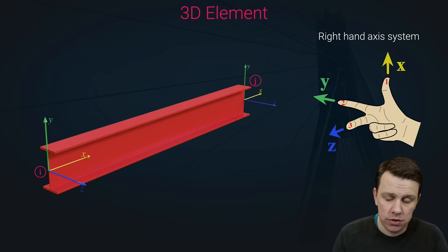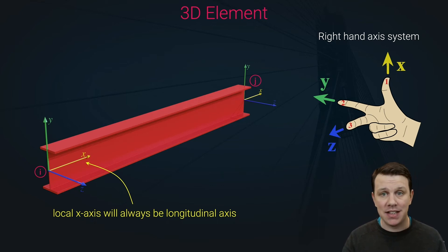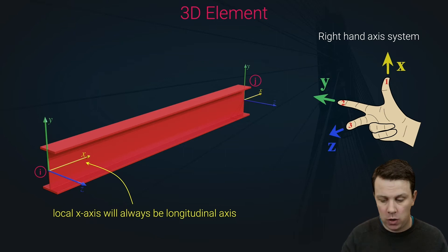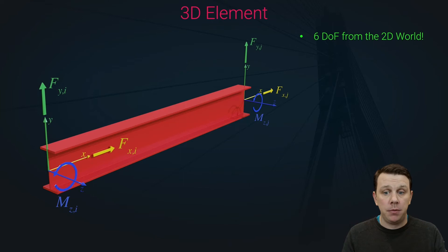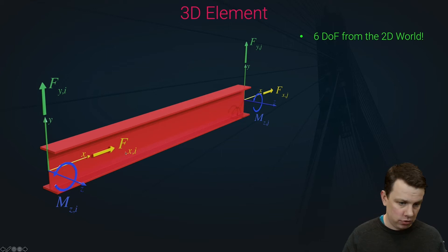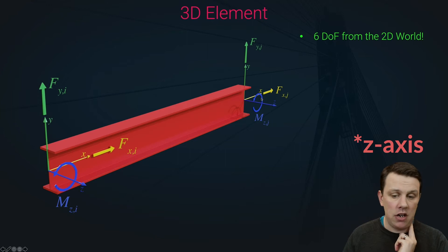We use the right-hand axis system, and the local longitudinal axis is always our x-axis. That allows us to set up a local axis system relative to each member. Now, considering degrees of freedom: from the 2D world we have six DOF — longitudinal forces Fxi and Fxj, transverse shearing forces Fyi and Fyj, and moments about the z-axis, Mzi and Mzj.